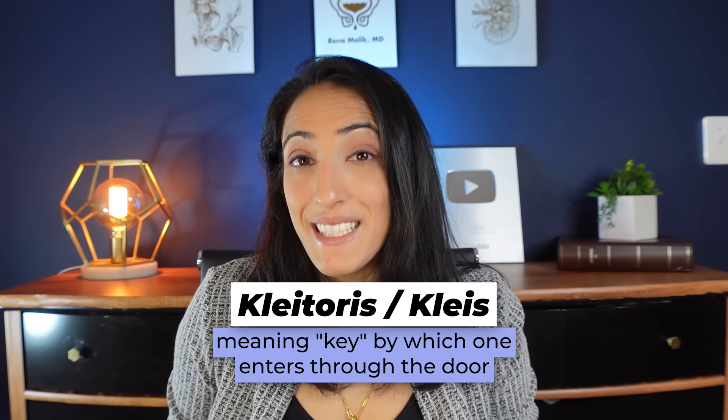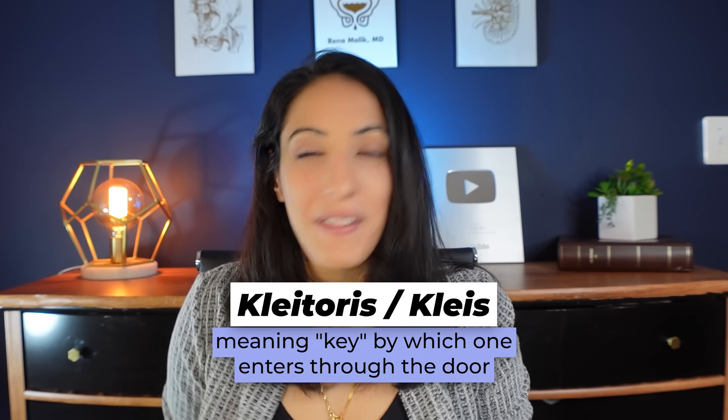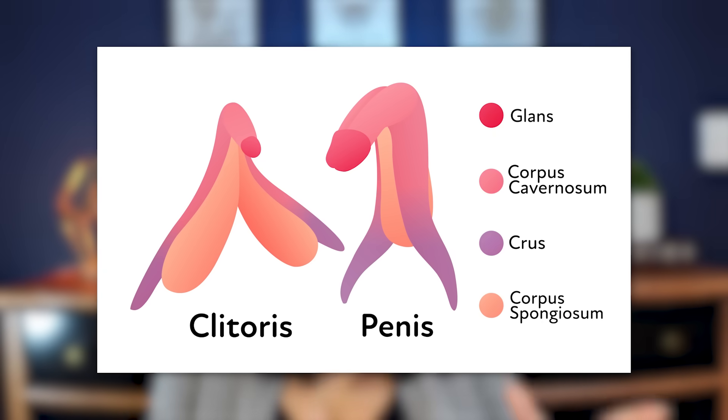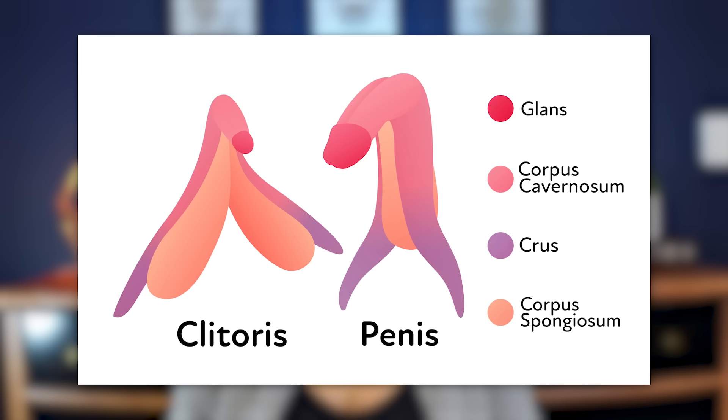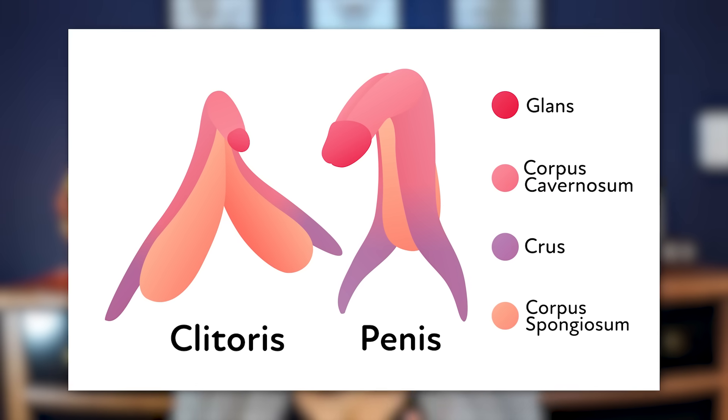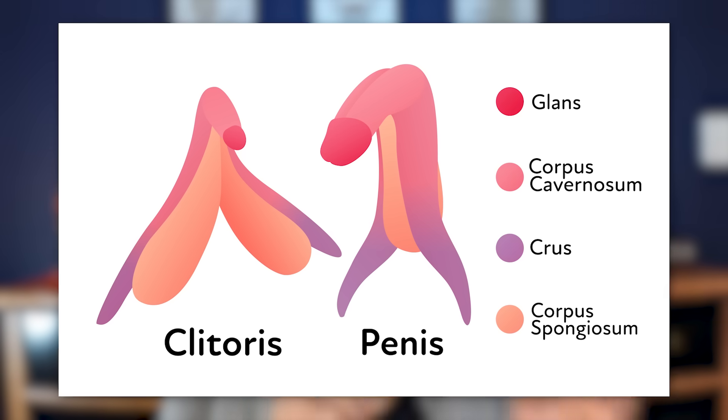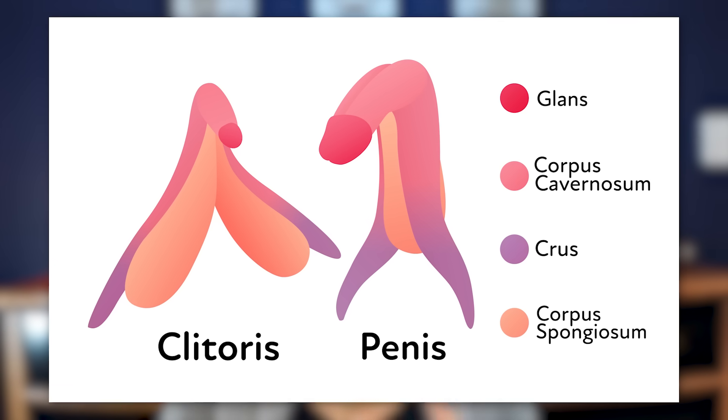Let's get a little deeper into the clitoris. Interestingly, the word clitoris is derived from the Greek word kleis, meaning 'key by which one enters the door.' The clitoris is embryologically identical to the head and shaft of the penis. While it looks quite small from the outside, the entire internal part of the clitoris is actually quite long — it bifurcates very similarly to how the erectile tissue of the penis does. Anatomical dissection studies have shown it is identical in nerve and blood vessel structure to the penis.